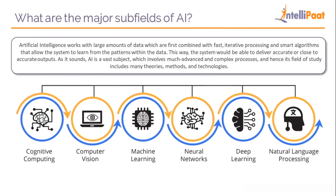You have cognitive computing, computer vision, machine learning, neural networks, deep learning, and natural language processing. Cognitive computing's ultimate goal is to imitate the human thought process, doing so using self-learning algorithms, pattern recognition, neural networks, and natural language processing. It uses all these methods to mimic the human way of thinking — it's a step toward general AI even though it's not completely there.